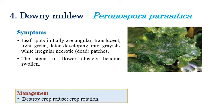Coming to downy mildew, caused by Peronospora parasitica. White color downy growth can be seen on the surface of leaves. Initially, angular light green transparent spots can be seen on the upper surface, which are irregular. In later stages, necrotic patches appear. Initially downy growth is on the lower surface, while white spots and transparent green patches appear on the upper surface. Later, stem and flower clusters become swollen.